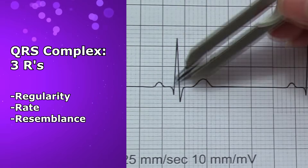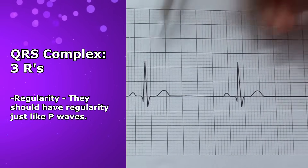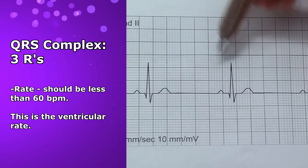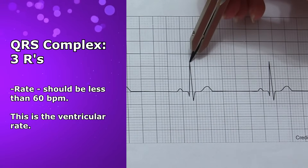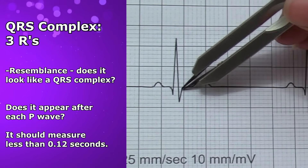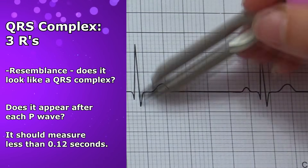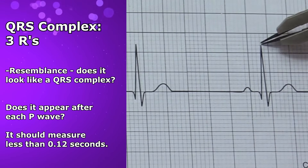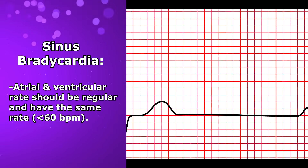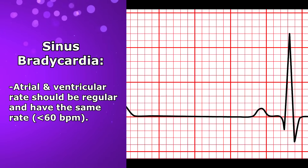Then look at the QRS complexes and apply the three R's to them as well. Look at their regularity — they should have regularity just like the P waves. When you count their rate, they should be less than 60; this tells us the ventricular rate. Look at the resemblance of those QRS complexes — there should be a QRS complex present after each P wave and they should measure less than 0.12 seconds. For sinus bradycardia, the atrial and ventricular rate should both be regular and each have the same rate, which should be less than 60.